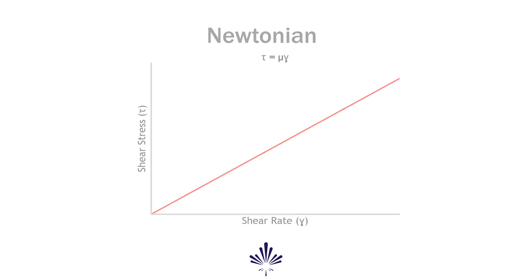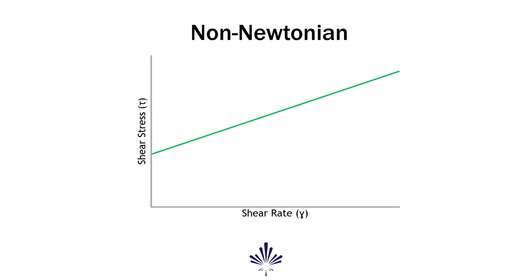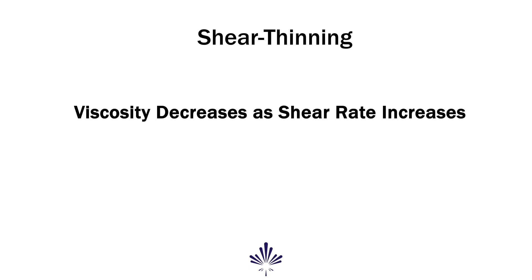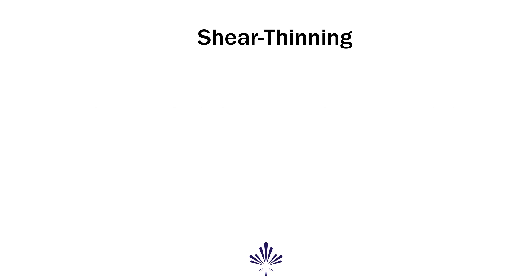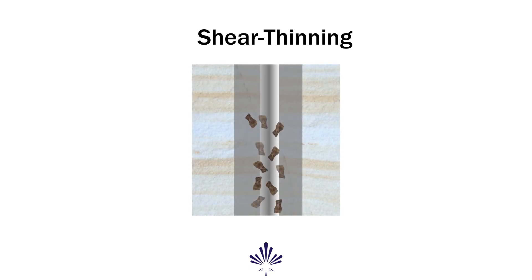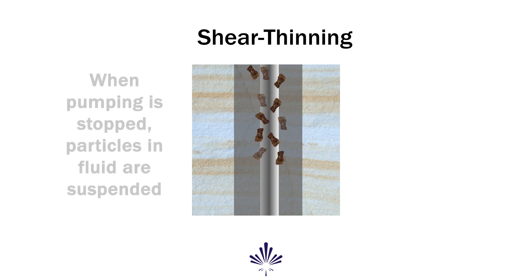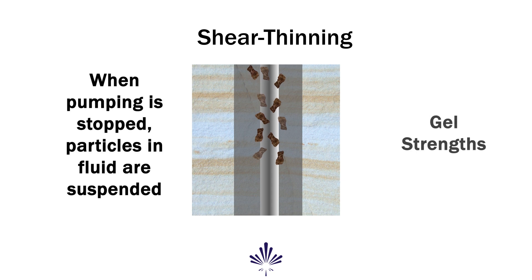Unlike Newtonian fluids, non-Newtonian fluids' shear stress is not directly proportional to shear rate. Non-Newtonian fluids do not have a constant viscosity that describes their behavior at all shear rates. Most non-Newtonian fluids exhibit shear thinning behavior such that viscosity decreases as the shear rate increases. As fluid is pumped at higher rates through the drill string and bit, it shear thins to a lower viscosity. At lower velocities in the annulus, the viscosity of the fluid is higher, providing hole cleaning. And at very low or no velocity, such as when you stop pumping, the fluid develops gel strengths that contribute to suspending weight material and cuttings.